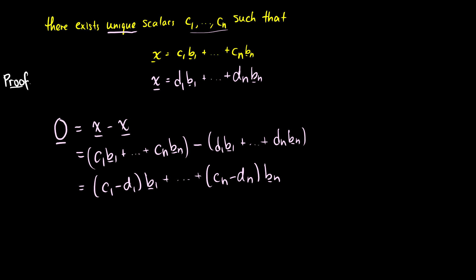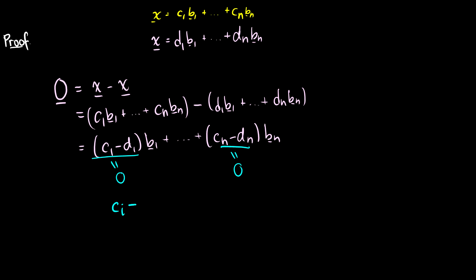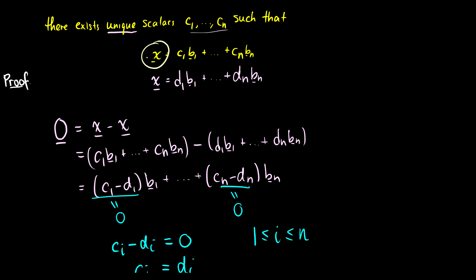These vectors are in a basis, so they're linearly independent, which means only the trivial solution exists. So c1 minus d1 must equal zero, and cn minus dn must all equal zero. This means ci minus di equals zero for i from 1 to n, which means ci equals di — so the two representations are the same. There's only one way to represent each vector in terms of b1 through bn.